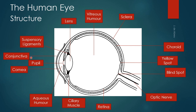Let's start with the conjunctiva. The conjunctiva is a membrane that goes over the cornea, which is just below it. The cornea is part of the sclera — it is a specialized disc of the sclera. So at the front of the eye, the sclera forms a specialized disc, and that is called the cornea.